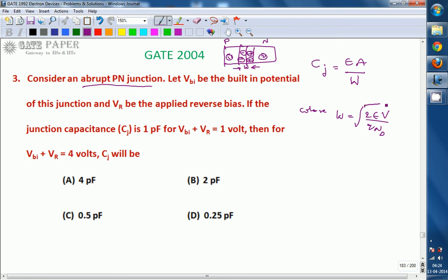So this is the equation for width of depletion region, W equals square root of 2 epsilon V by QND for P plus N junction. That is W is proportional to square root of V.